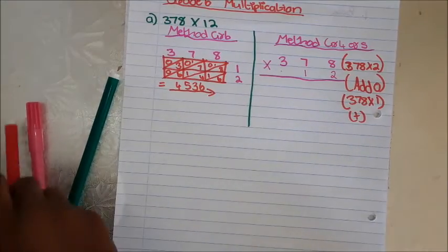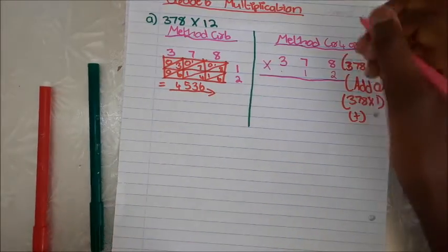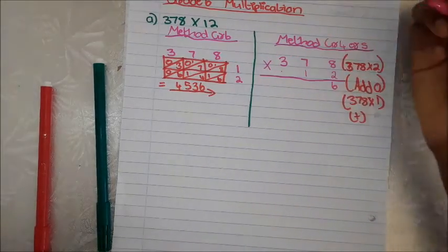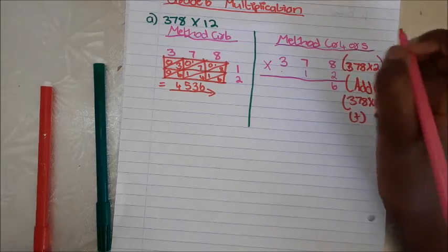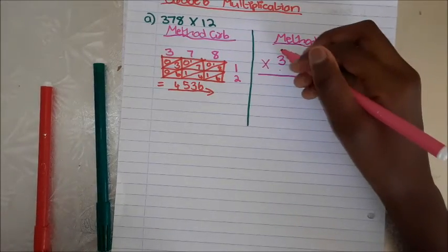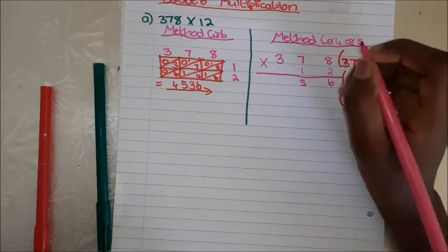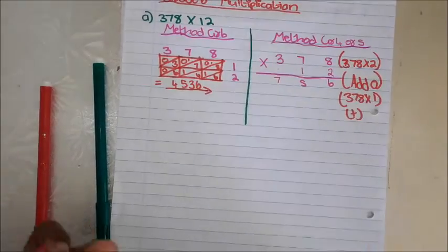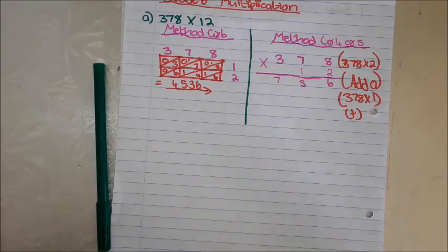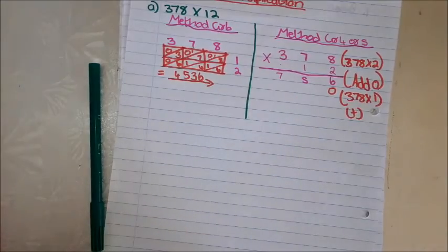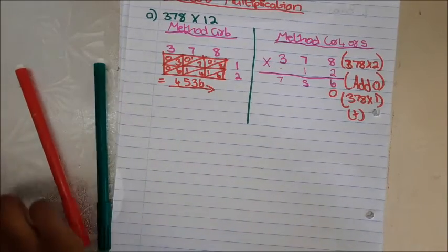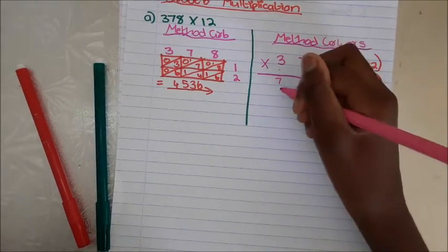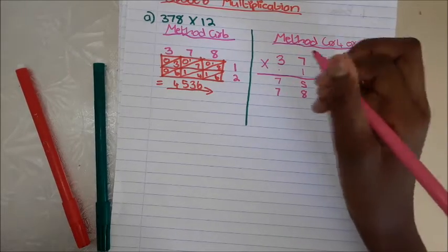With my pink pen: 8 times 2 is 16, hold the 1 on top. Then 7 times 2 is 14, plus 1 is 15, hold that on top. Then 3 times 2 is 6, plus 1 is 7. Then we add the golden zero. Now 8 times 1 is 8. 7 times 1 is 7. 3 times 1 is 3.